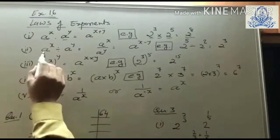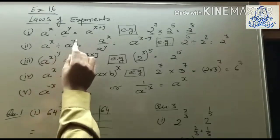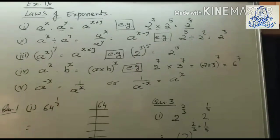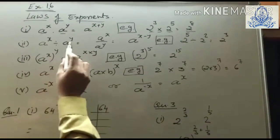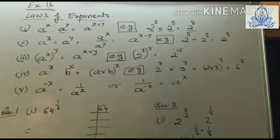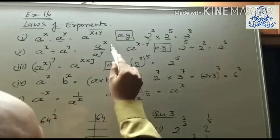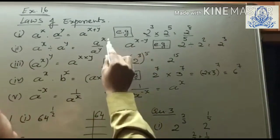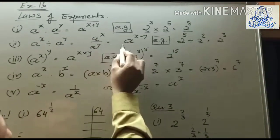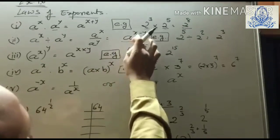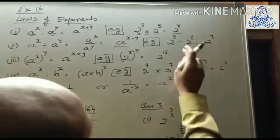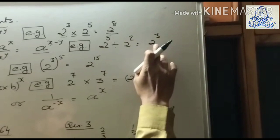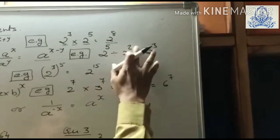Rule 2: a^x ÷ a^y. This rule is based on division, which can also be written in fraction form. When dividing with the same base, we subtract the exponents: a^(x−y). For example, 2⁵ ÷ 2² = 2^(5−2) = 2³.